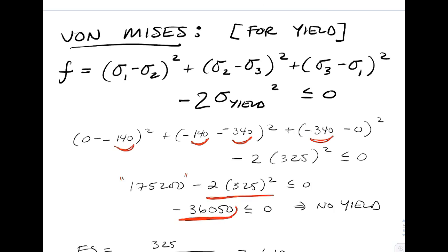We get a negative number, it's definitely a smaller number, so we are approaching the yield surface, but we still have not reached it yet, so we have no yield for von Mises.